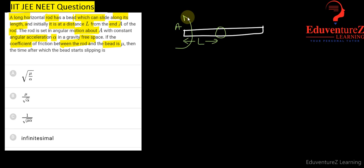The rod is rotating about this end and the bead is completing a circle like this of radius L.